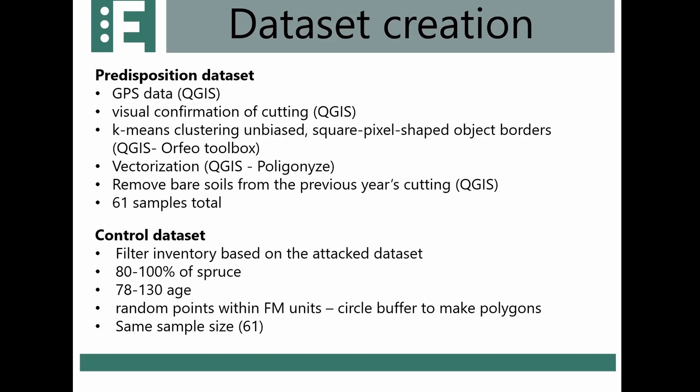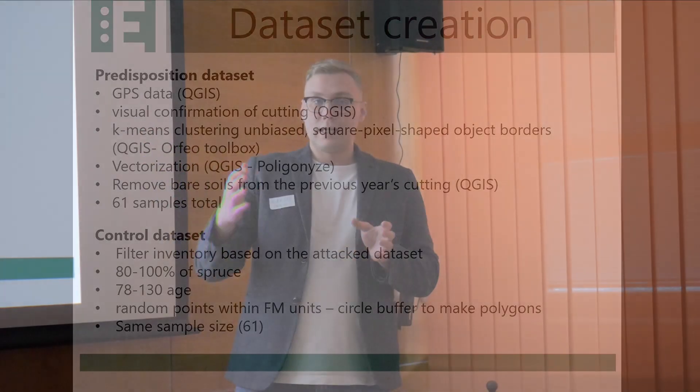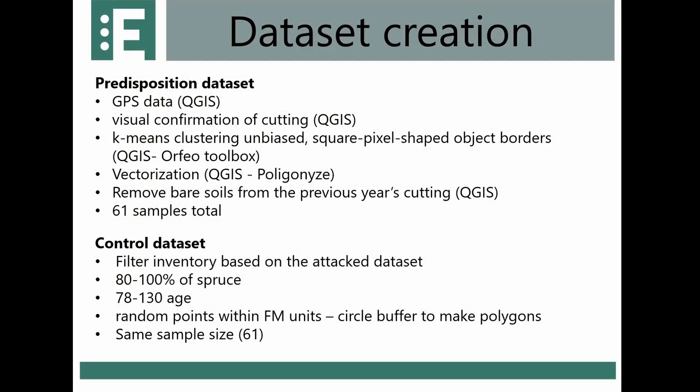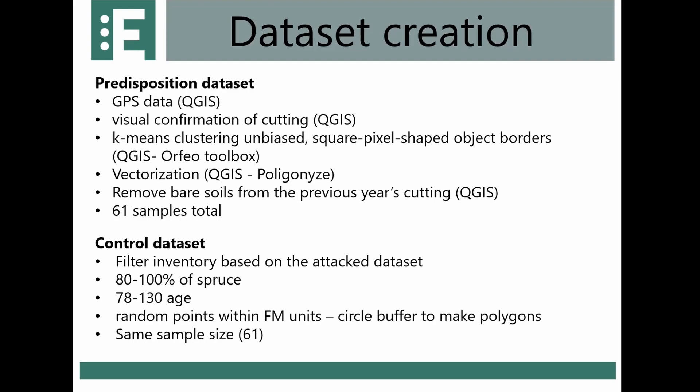After visual validation, to avoid bias from contour edges of cuttings, we applied k-means clustering. The borders of bark-beetle-affected areas were defined at the pixel level, then vectorized. We found that freshly attacked areas during the season were often connected to previous years' cuttings — bare soil areas called Kahlschlag (clear-cuts). We had to manually remove the previous year's cuttings from the bare soil polygons of the attack plots, ending up with 61 sample areas.